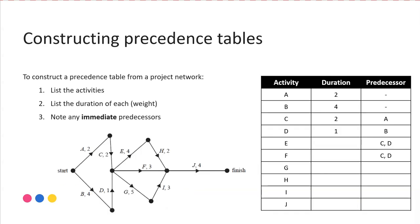Here's an example of constructing a precedence table from a graph. The things you want to look for is making sure that all of the activities in the network are represented, going through generally in some sort of alphabetical order, and making sure you've got all of the activities listed in the table. The next step is to note the duration of each one. So remember the duration is just the value that is on the edge next to the letter for that particular activity. So activity E has a duration of 4, F a duration of 3, G duration of 5, H 2, I 3, and finally J 4.